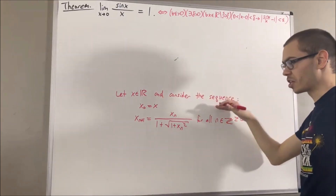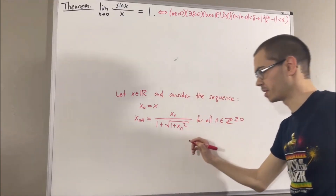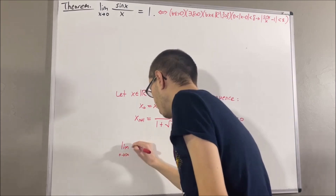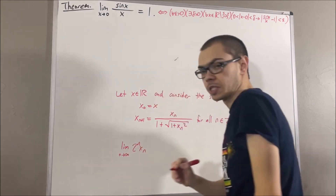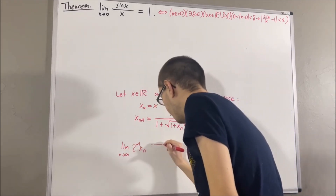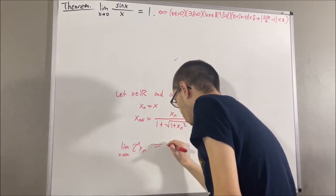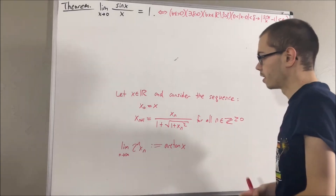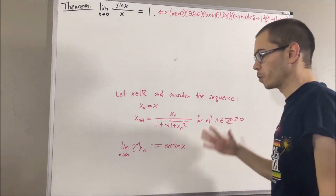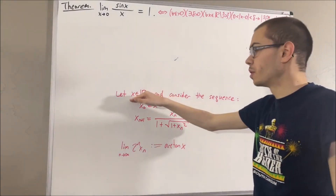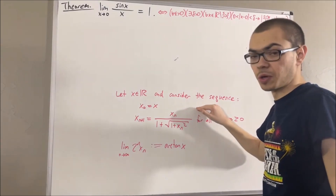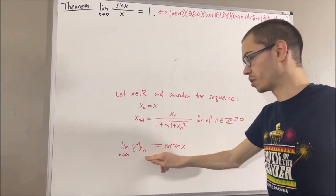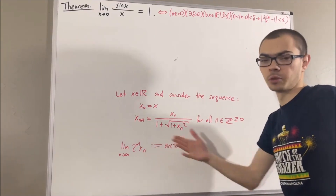Let x be any real number and consider the following sequence. We have proven that the sequence 2^n · x_n converges, and we defined the value that this sequence converges to be the arctangent of x. For example, if x = 0, this is just a constant sequence of zeros, so the arctangent of 0 equals 0.